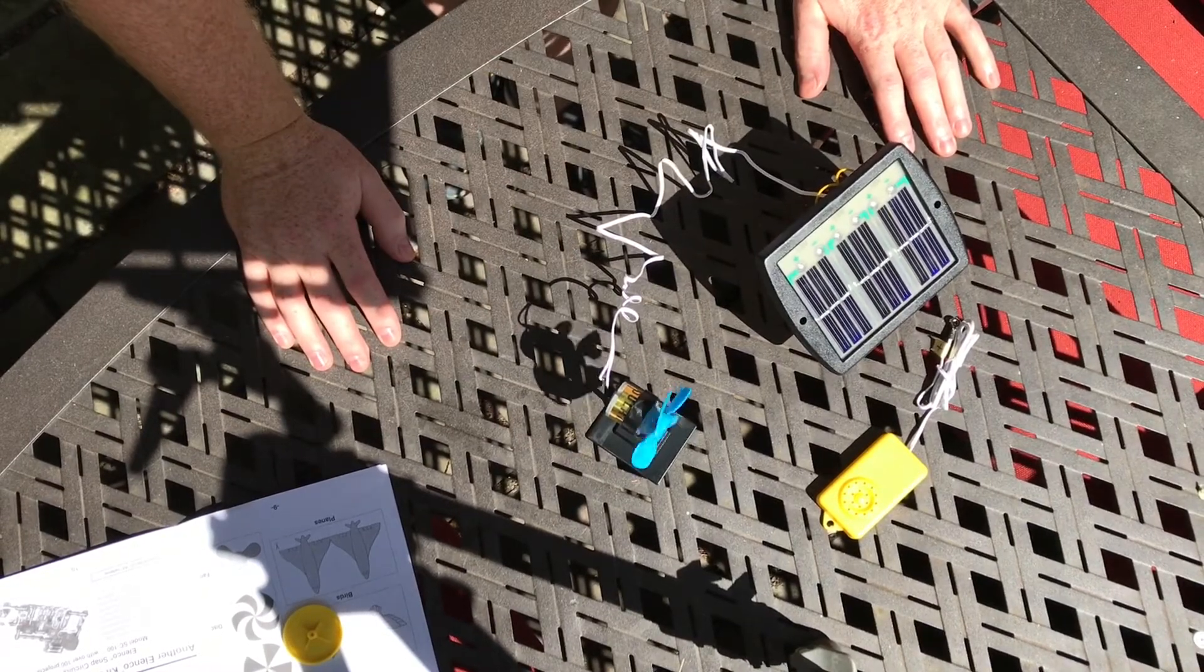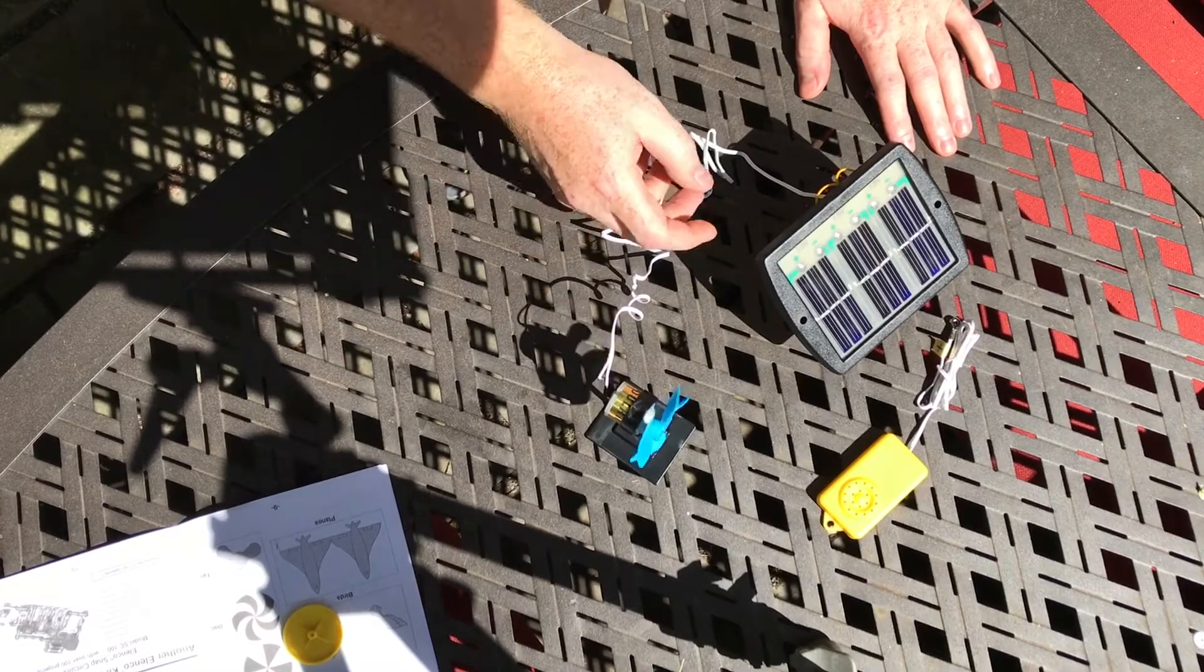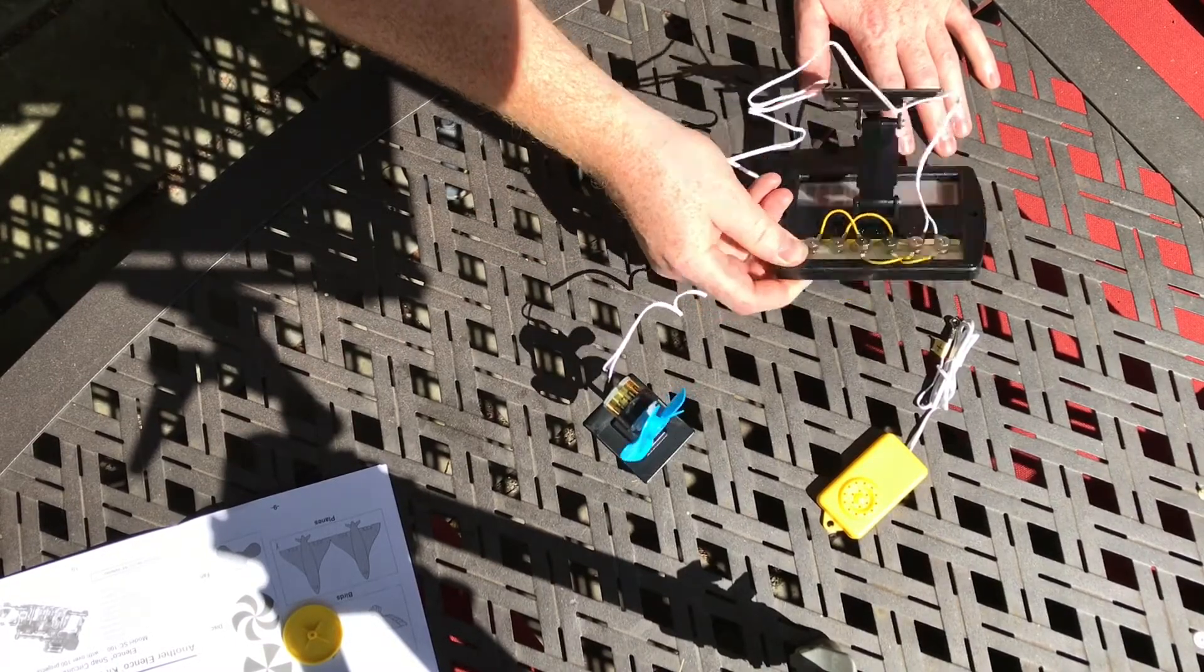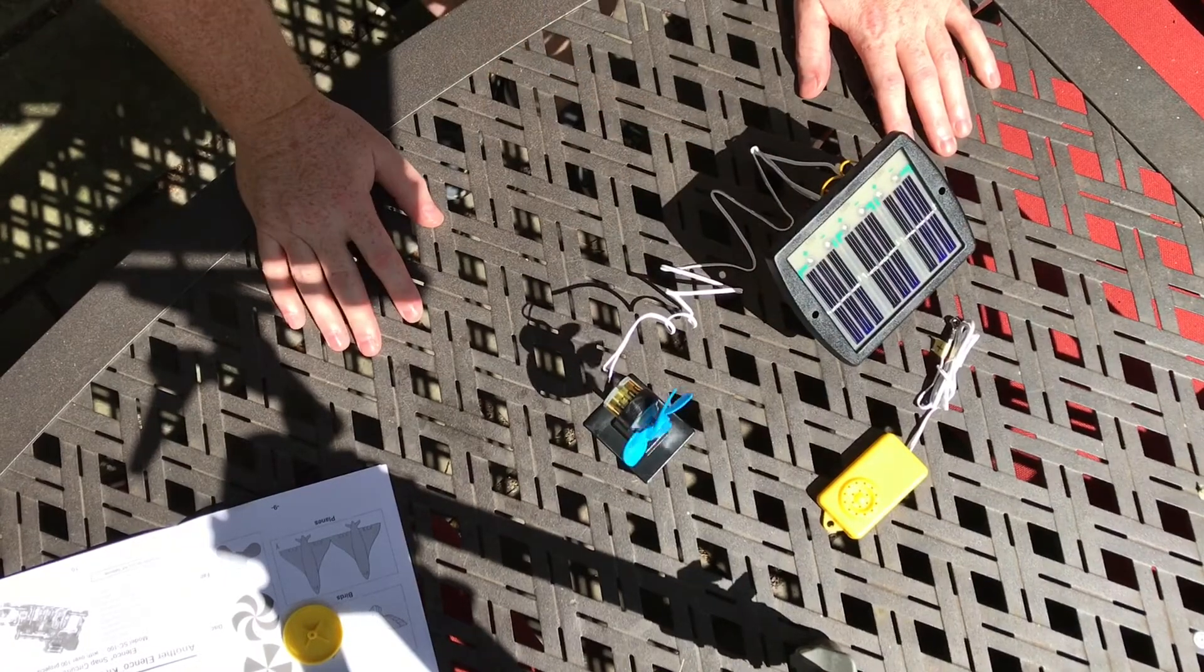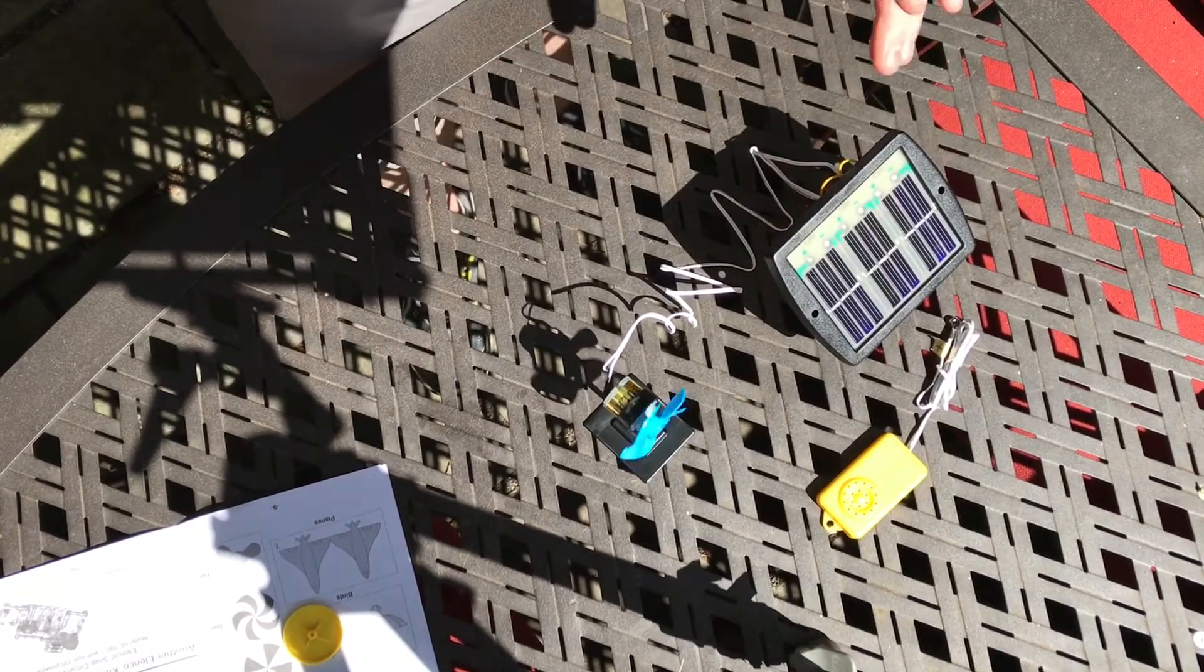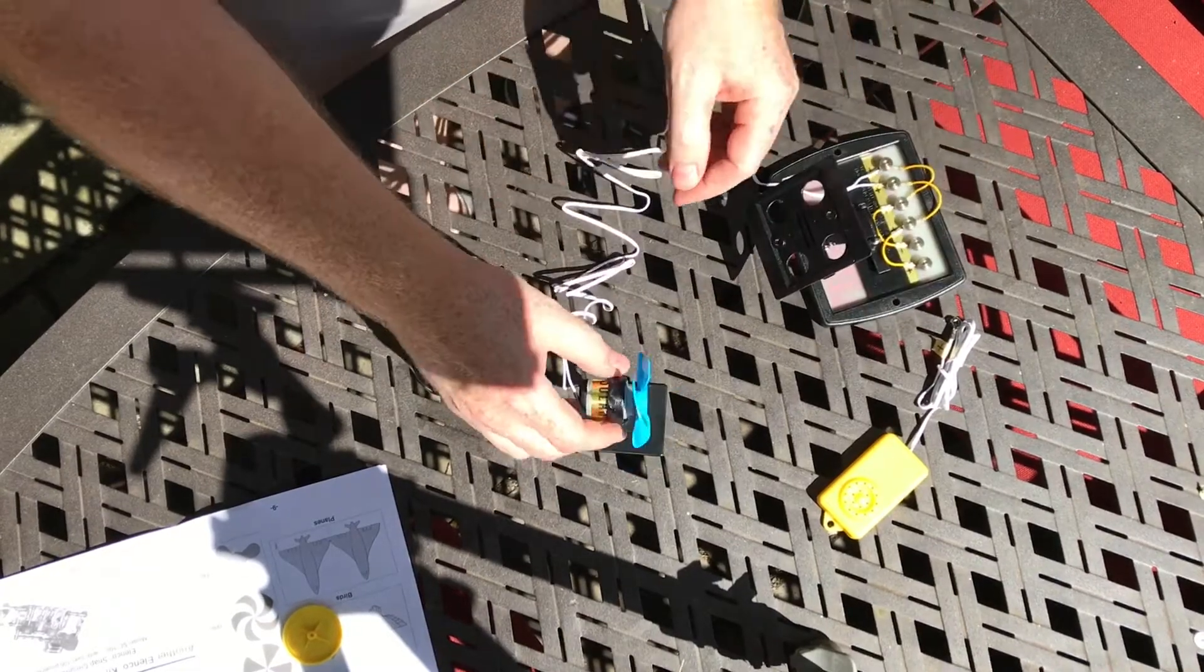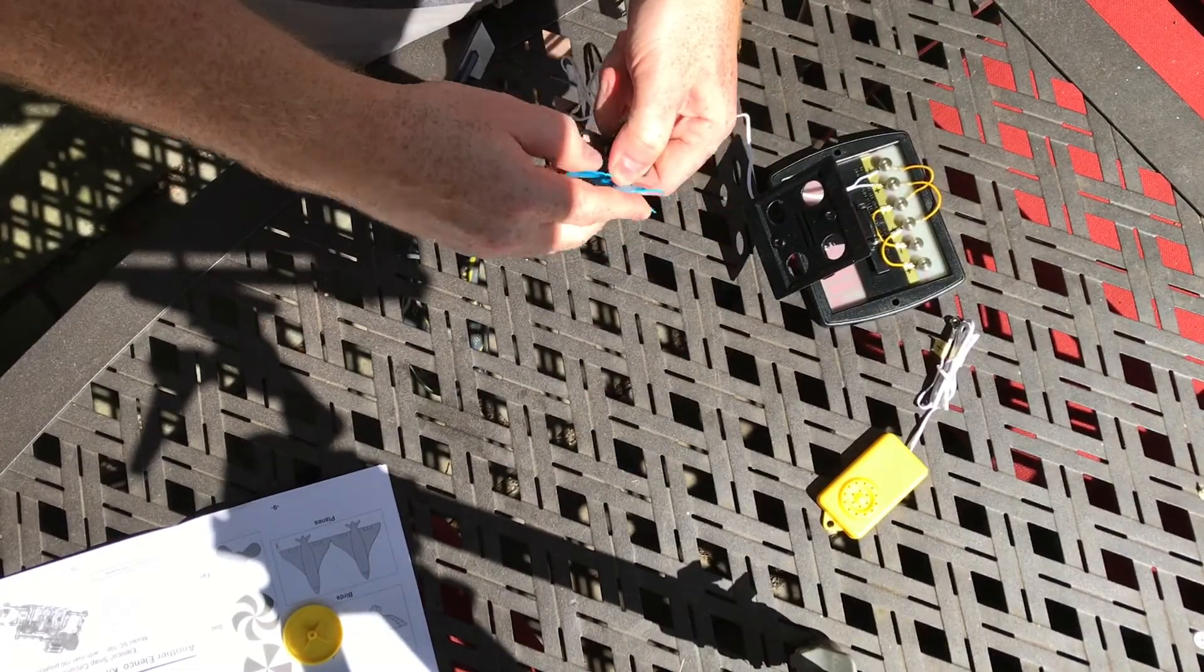It'd be nice to put an on-off switch in here somewhere. That'd be great, because as soon as you wire this up, if you do it outside, it turns on immediately. That'd be kind of cool. That'd be a good addition to the kit. Simple enough, I suppose you can swap out the fan blade.